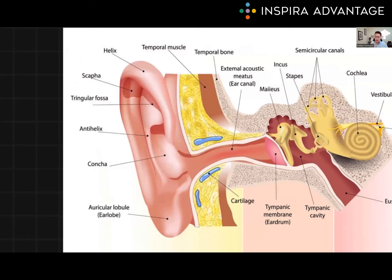Let's start with the outer ear, the part we all love and can see. The outer ear consists of the pinna or auricle — the fleshy bit that hangs off — and the external auditory canal, which is the hole. The pinna helps us collect sound waves and direct them into the ear canal, and gives us a little bit of directionality on where the sound came from. The ear canal ends at the tympanic membrane, also known as the eardrum. When sound waves hit the eardrum, they cause it to vibrate, which sets the process of hearing in motion with the middle ear.